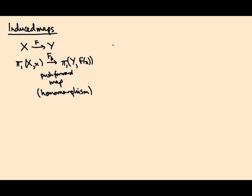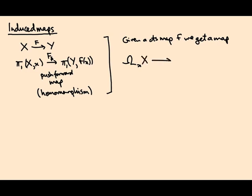So how is this map defined? Well, given the continuous map f, we get a map from the space of loops—remember this was notation for loops based at x on X—to loops based at f of x on Y.